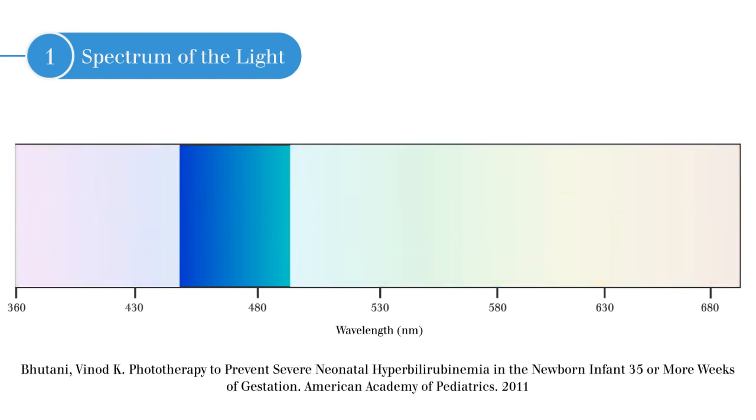the light responsible for breaking down bilirubin in jaundiced babies, is most effective at a wavelength of 460 to 490 nanometers, per the latest reports from the American Academy of Pediatrics.